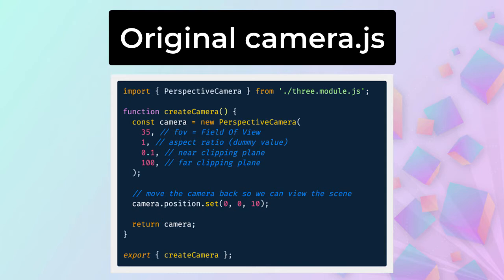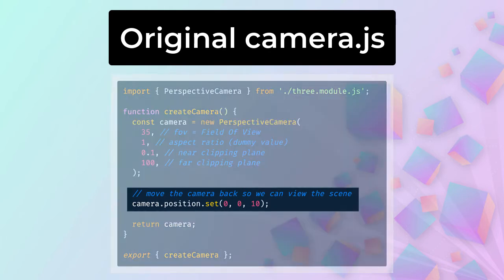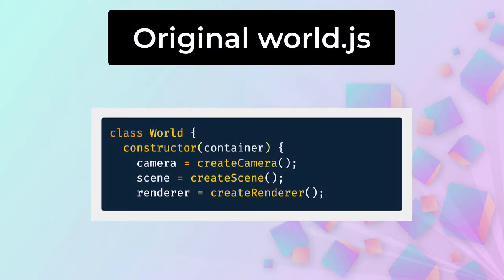Here is the original code from Camera.js. Like our other modules, it contains one main function. In this case, it's called Create Camera. The camera's position is defined on this line of the function, and you can see how it takes a set of three coordinates as an input. To add an instance of this camera to our 3D world, we call the Create Camera function within World.js. We do this without passing in any parameters, which is acceptable provided the camera doesn't change during our animation. However, if we want the ability to reposition the camera, we need to build in some additional flexibility, which means adding input parameters to Camera.js.